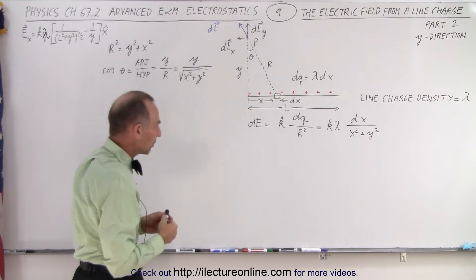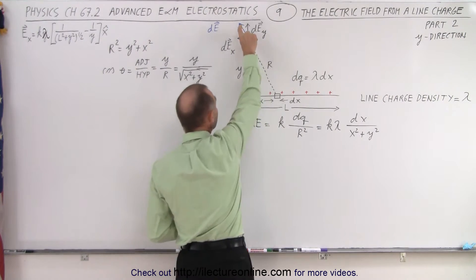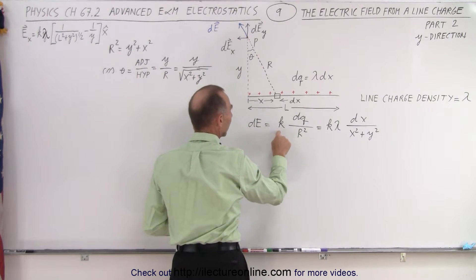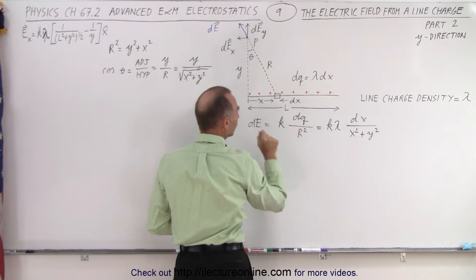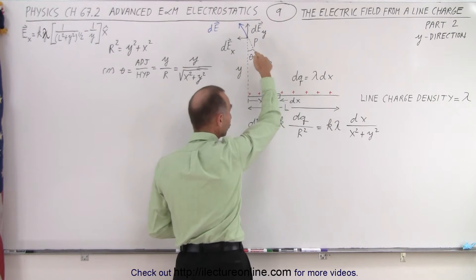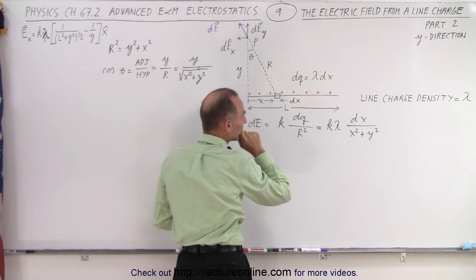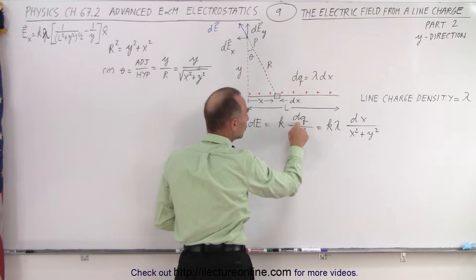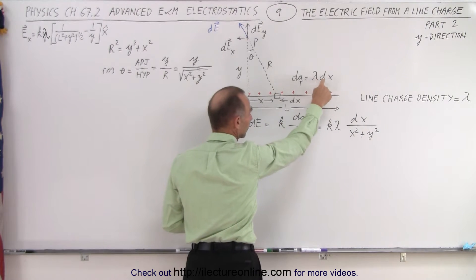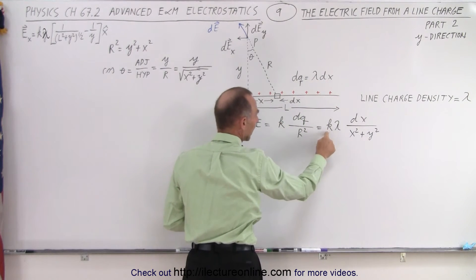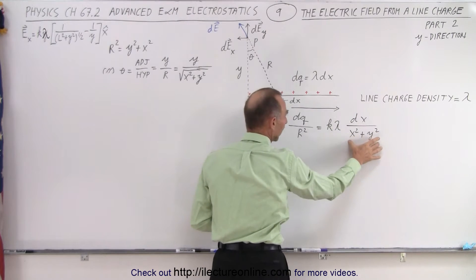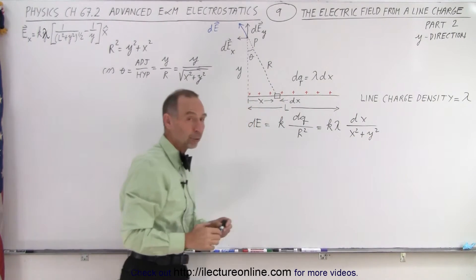Because we want to have the small dE component which is equal to k times the charge, a small dq divided by the distance r squared. And notice that we can write dq as being the line charge density times dx. So we write k lambda times dx over x squared plus y squared because that's what r squared is equal to.